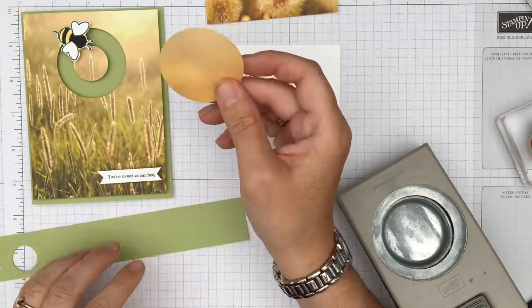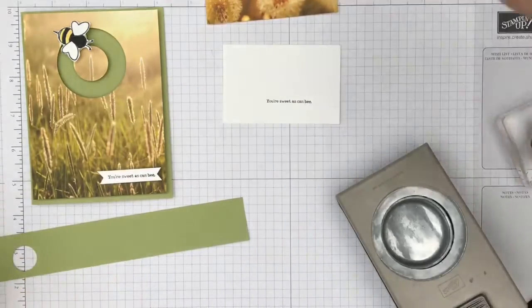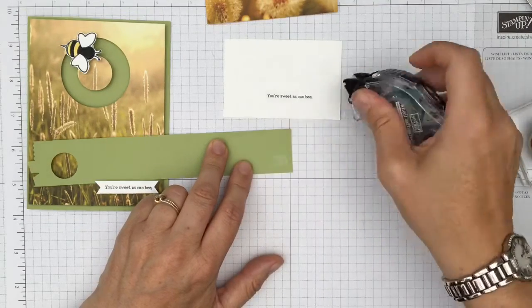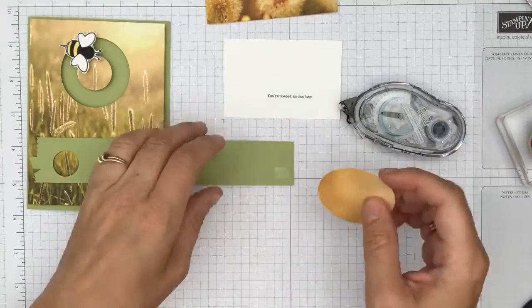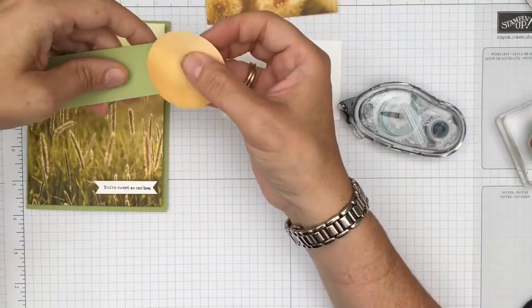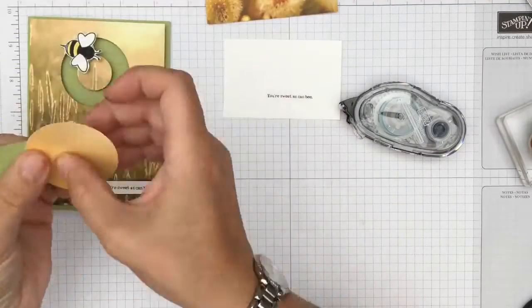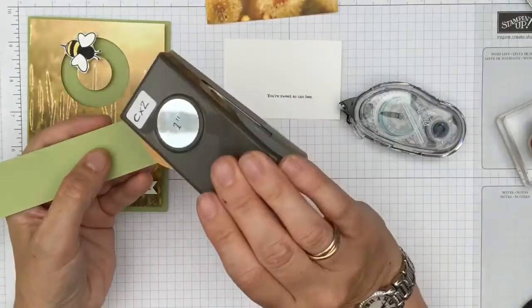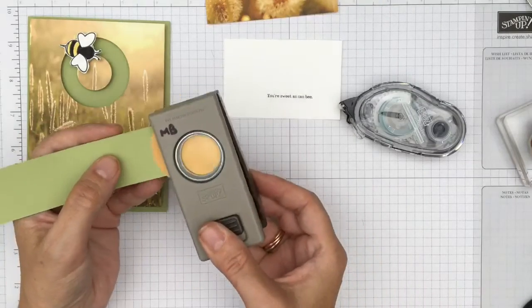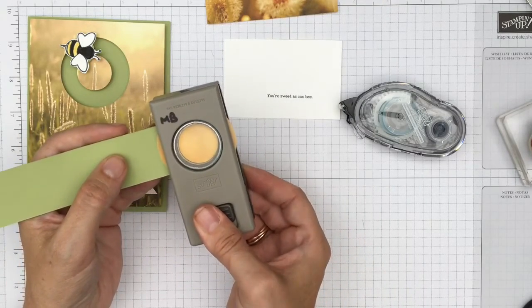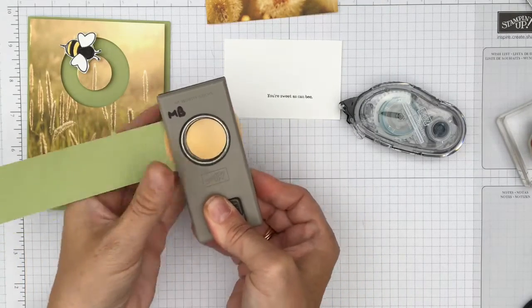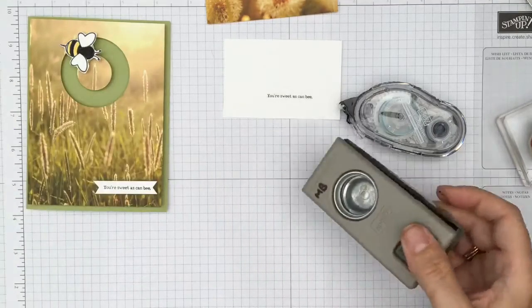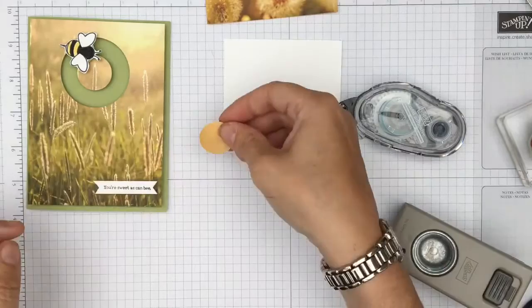Next, what we want to do is get our little scrap of Pear Pizzazz cardstock and we're just going to put a little bit on here. It's just so that when we put the circle through our punch, it just gives us that little bit extra holding room. I am using the one-inch circle punch. Center it up. It doesn't need to be in the center, but if you had a little bit of a design there, you could possibly go over that. And then we've got our little circle as well.